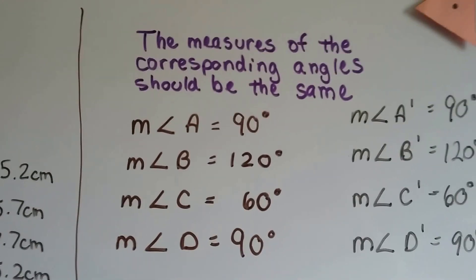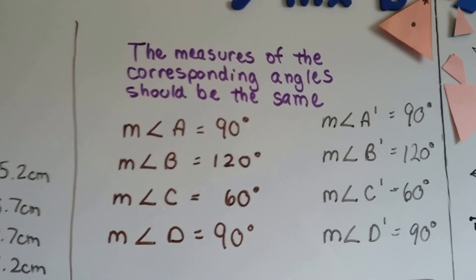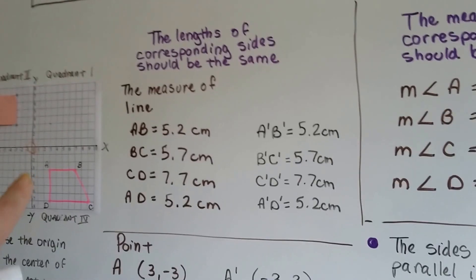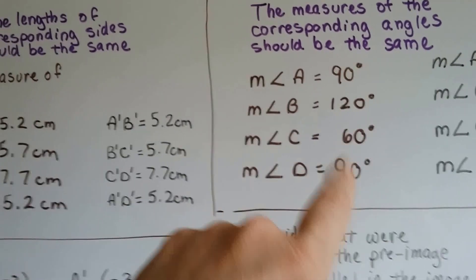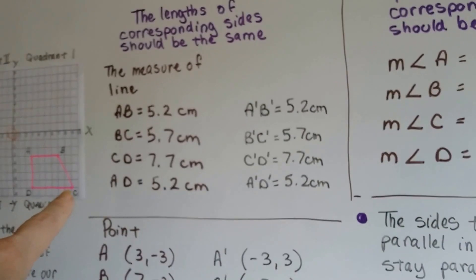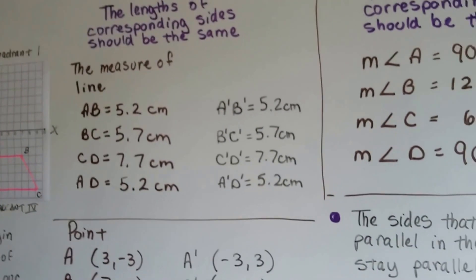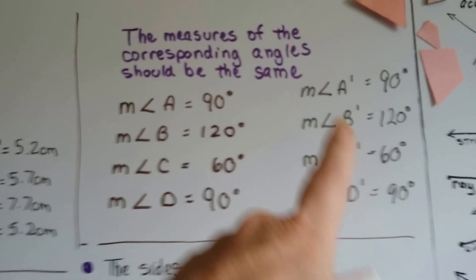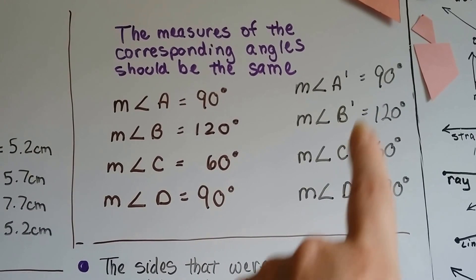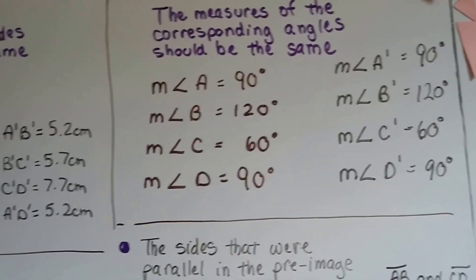When we look at the measures of the corresponding angles, they should be the same. Measure of angle A and D are 90 degrees, like a square. The measure of angle B is 120 and C is 60. C is smaller - it's an acute angle and the measure of angle B is an obtuse one. Well, they're the same in A prime, B prime, C prime, and D prime's angles. They're all the same.